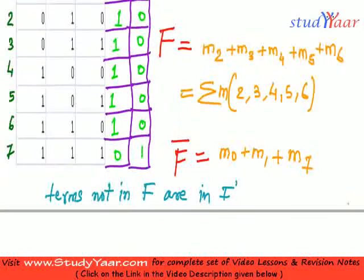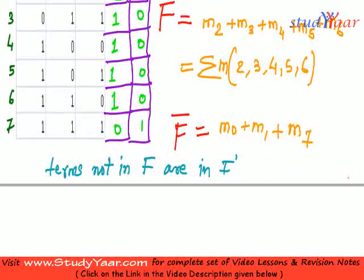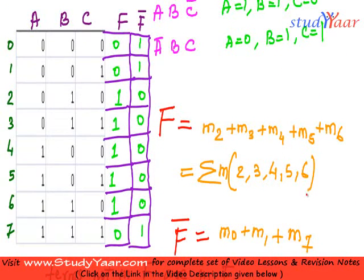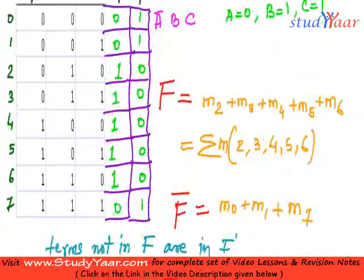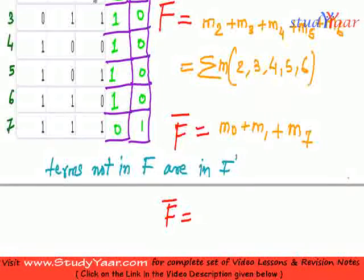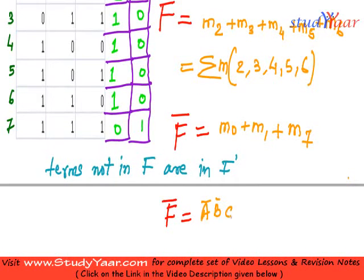So now that we have calculated F bar you can also write F bar in terms of a simple SOP. M0 is what? M0 is A0, B0, C0. So this is equal to A bar, B bar, C bar.